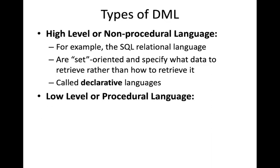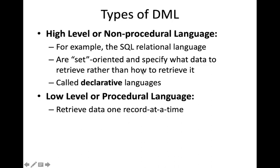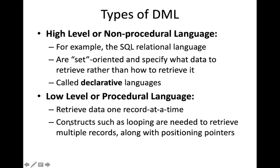The second type is low-level or procedural language, which retrieves data one record at a time. Here we have to specify how to retrieve the data — looping constructs are needed to retrieve multiple records, and positioning pointers must be specified. In the high-level case, we only specify what is to be done; in the low-level case, we must specify how to retrieve the data.